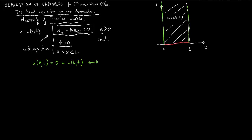We want that the solution at x equal 0 for every value of t greater than 0 will be 0. And we also want the solution at x equal l for any value of time greater than 0 to also equal 0. That is our boundary condition. We also want our solution to satisfy an initial condition that at t equal 0, the value of u at every point x on the interval is a given function f of x.